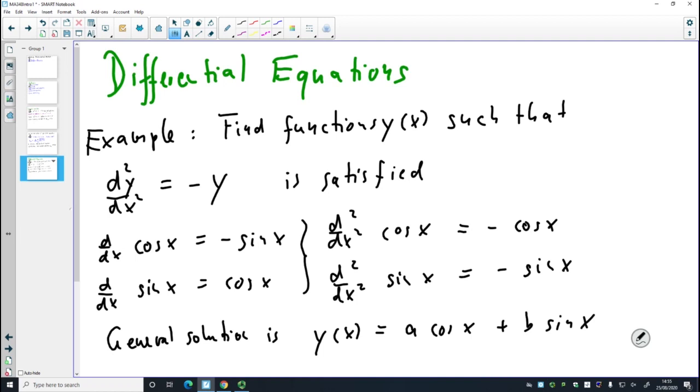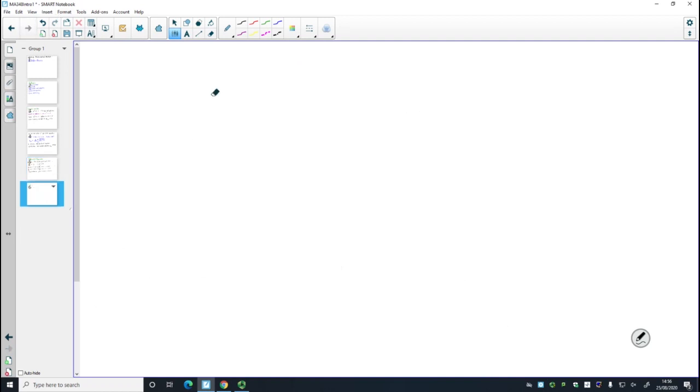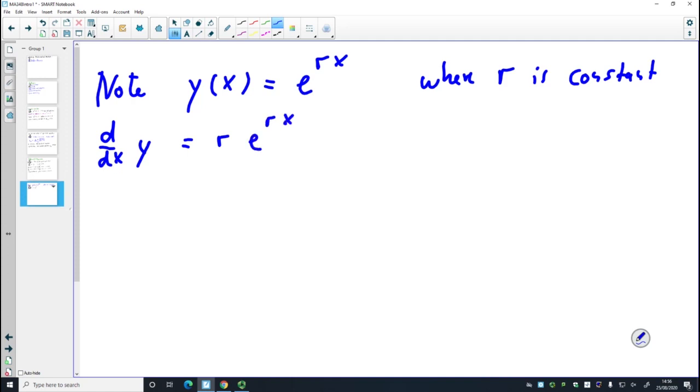But this is quite ad hoc when we make some guesses. Is there a way of making this a little bit more systematic? One other thing we could notice is: let's try this. If I take y(x) to be e^(rx), where r is a constant, then I can calculate the derivative, and this gives me r·e^(rx). I also calculate the second derivative. This is the application of the chain rule. So r²·e^(rx).